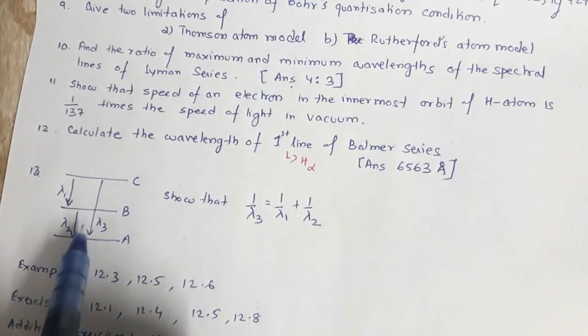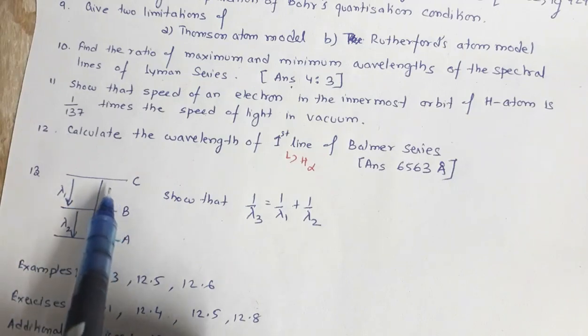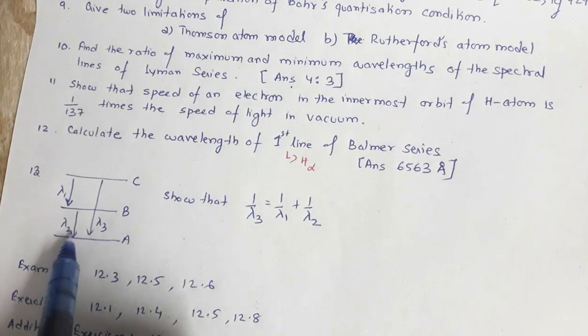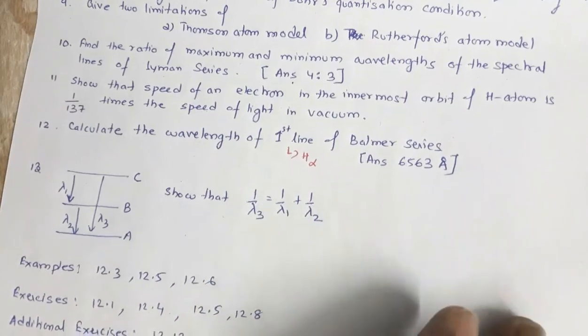For these energy levels, if the transition is between C and B the wavelength of light is lambda 1. For C to A it is lambda 3. From B to A it is lambda 2. You have to show that 1 by lambda 3 is equal to 1 by lambda 1 plus 1 by lambda 2.